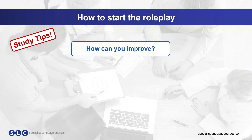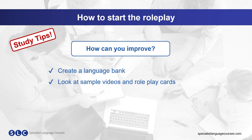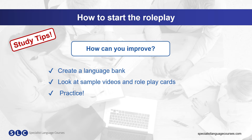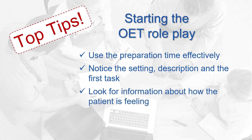So what can you do to improve this part of your OET speaking? It's a good idea to create a language bank so you have a variety of appropriate phrases to start your role play confidently on the day of the exam. It would also help to look at sample videos and role play cards so you feel comfortable with a variety of settings and situations. Finally, it's essential that you practice — you need to be able to use the right language in real time, so remember that practice makes perfect. Top tips: use your preparation time effectively, notice the setting, description, and first task, look for information about how the patient is feeling, and be ready to start.